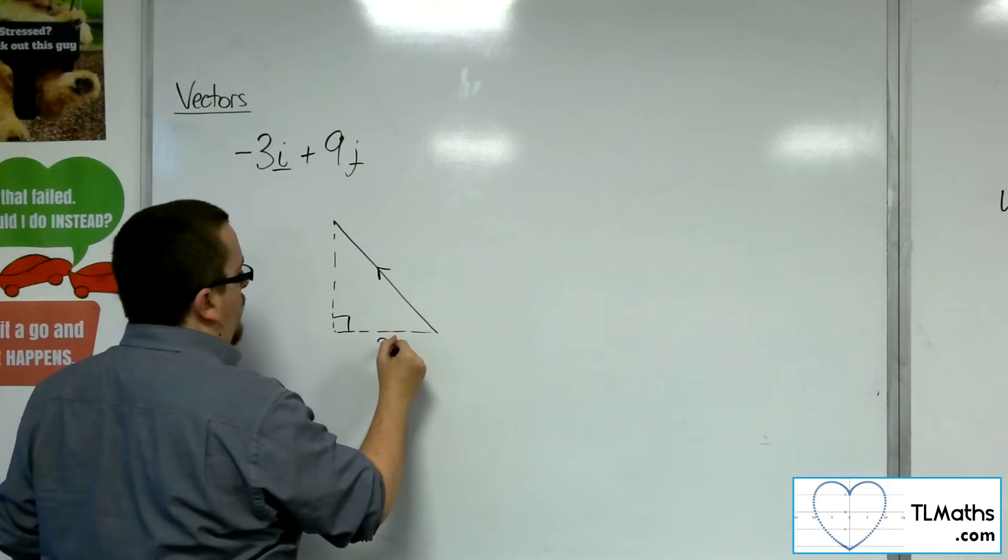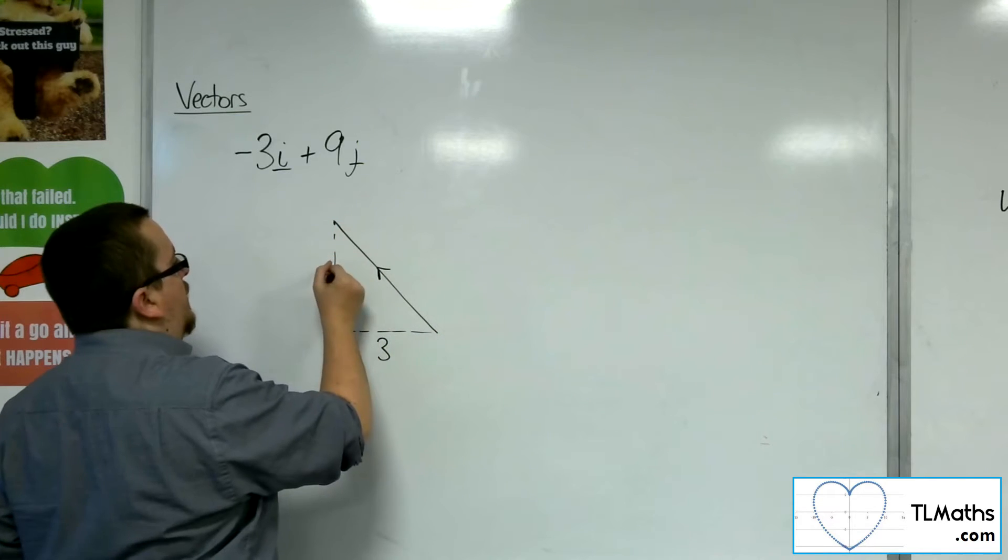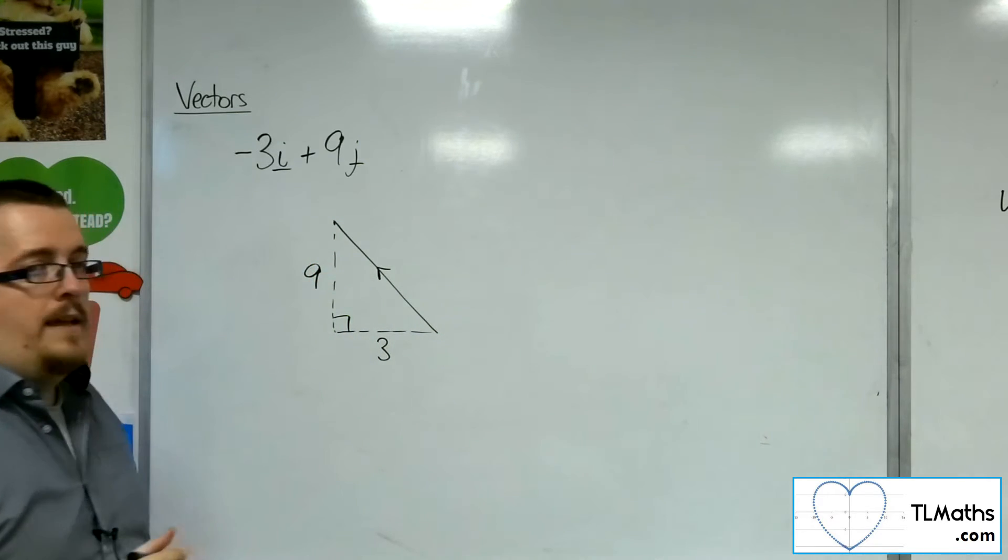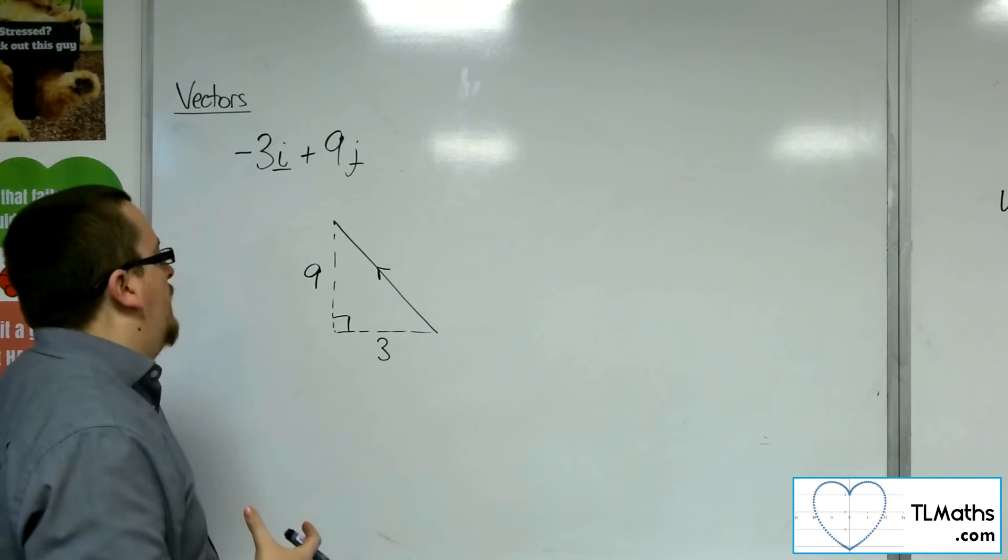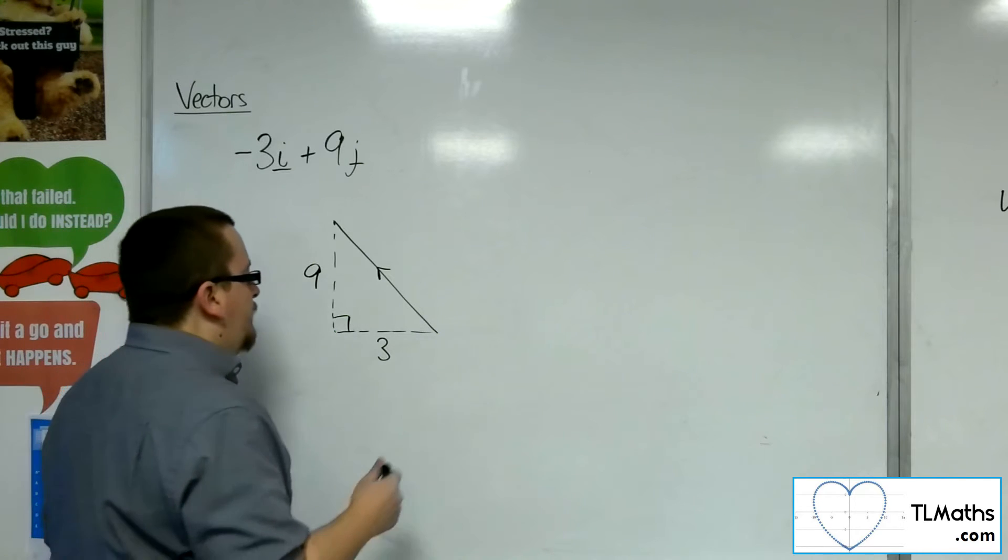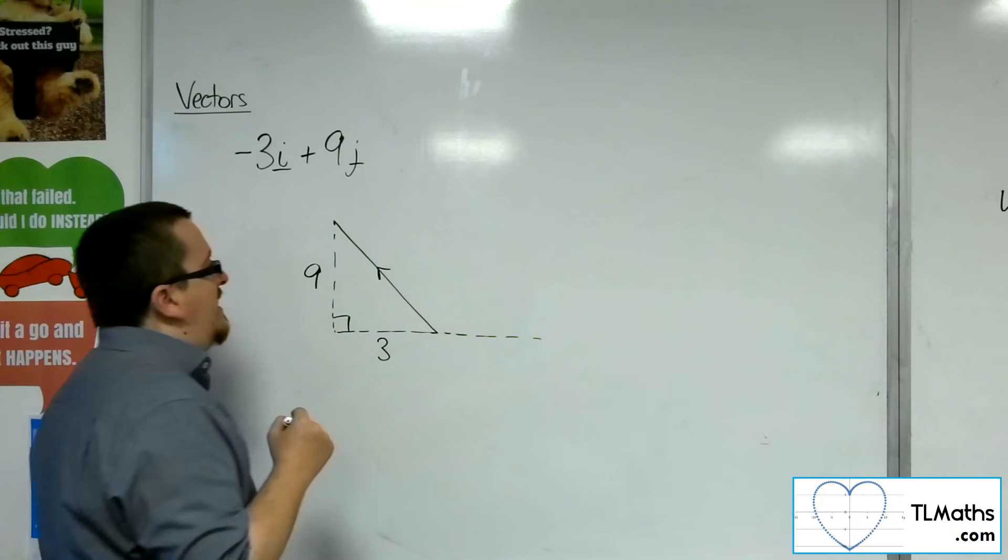OK, where we would be going 3 along and 9 up. So that is what this vector looks like. OK, so I'll draw in the x-axis.